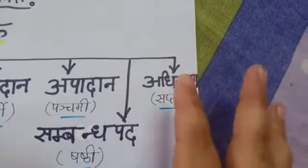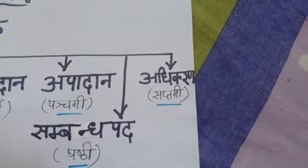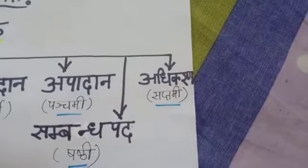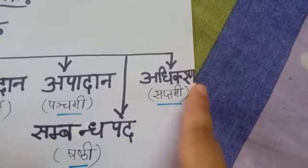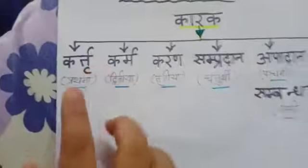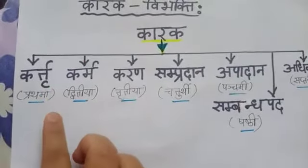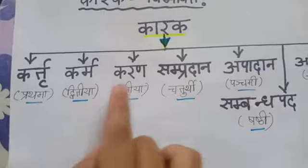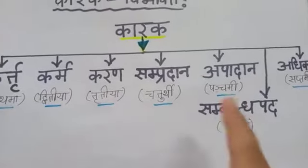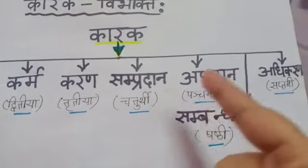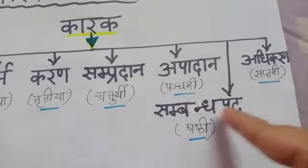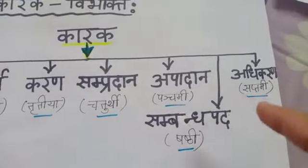Now the last one: adhikarana karak. You know that 'in', 'at', 'on', place, situation — those things are adhikarana karak. Adhikarana karake always takes saptami vibhakti. So learn like this: karti karake prathama vibhakti, karma karake dvitiya vibhakti, karana karake tritiya vibhakti, sambandha pada shashthi, adhikarana karake saptami.